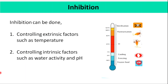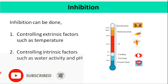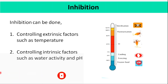The methods based on inhibition can be done by controlling extrinsic and intrinsic factors. As an example, the danger zone for microbial growth is considered to be between 5°C and 60°C. Thus, chilling and storing at a temperature below 5°C is one of the most popular methods of food preservation.